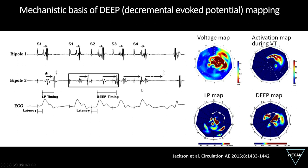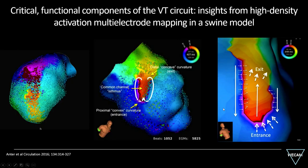Intraoperative balloon mapping in one example shows a bull's-eye reconstruction with an apical-lateral scar. The VT activation map shows that the diastolic pathway is better co-localized with the deep map than with the late potential map. Work from Anta in an animal model of early reperfusion myocardial infarction shows more functional components of the circuit. A typical figure of a figure-of-eight circuit has an entrance, central isthmus, exit, and outer loop sides. In a very fast VT at 250 ms, the increased density of isochronals suggests that circuit boundaries are actually functional rather than fixed.